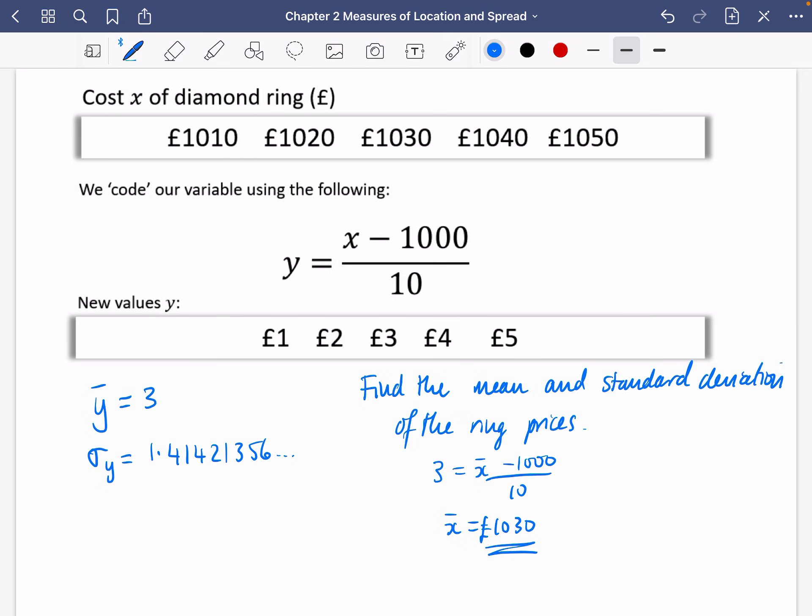So 1,030 is the mean price. Now, for the standard deviation, this won't affect it at all. So for the standard deviation, I'm just going to have that your 1.414 is just going to be equal to standard deviation of x divided by 10. So I'll multiply it by 10 and I'll get that the standard deviation is 14.14. And that's actually going to be in pounds really, isn't it? So what I can do here is I'll put that pound symbol at the beginning.